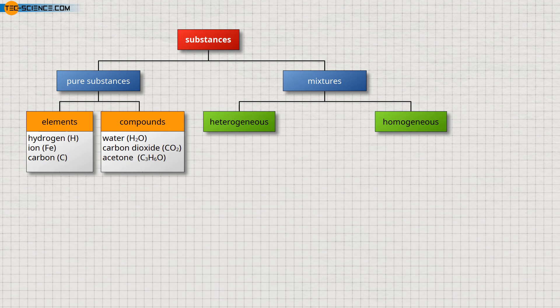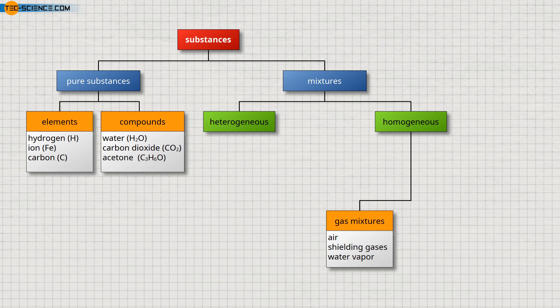Homogeneous mixtures have a uniform distribution of the different types of particles. These include, for example, gas mixtures such as air, shielding gases for welding or water vapor.